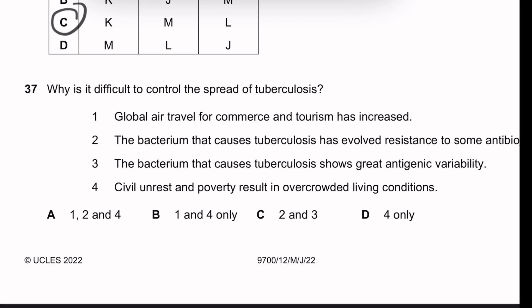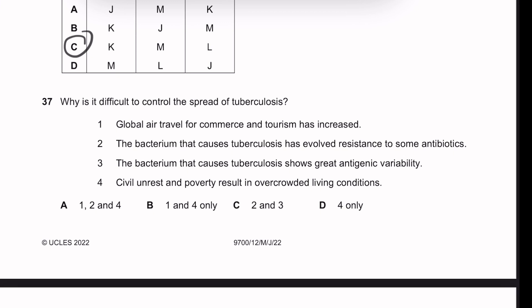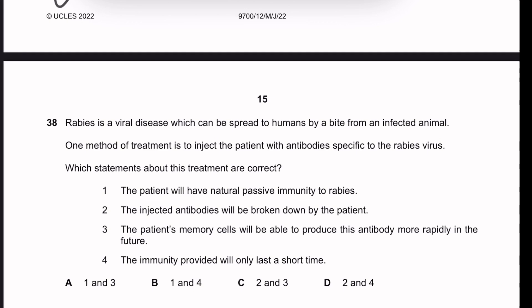Question thirty-six: why is it so difficult to control the spread of tuberculosis? Global air travel for commerce and tourism has increased — true, enabling spread. The bacteria causing TB has evolved resistance to some antibiotics — true. TB bacteria show great antigenic variability — not a major factor. Severe poverty and overcrowded living conditions — true. So the correct factors are 1 (air travel), 2 (antibiotic resistance), and 4 (overcrowding and poverty).